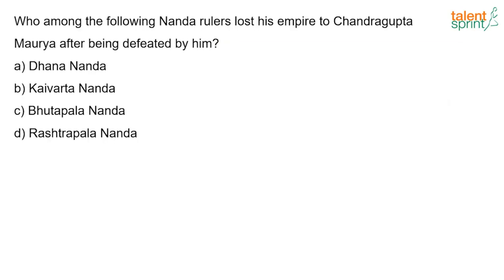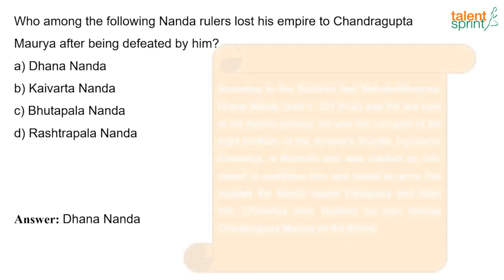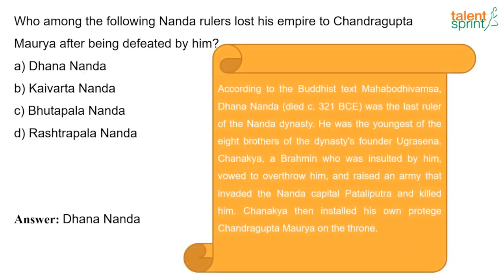Which Nanda ruler lost his empire to Chandragupta Maurya? The answer is Dhanananda. According to Buddhist texts, Dhanananda, who died in 321 BC, was the last ruler of the Nanda dynasty and the youngest of the eight brothers of the dynasty's founder Ugrasena. Chanakya, a Brahmin who was insulted by the Nandas, vowed to overthrow them, raised an army that invaded the Nanda capital Pataliputra, killed Dhanananda, and installed Chandragupta Maurya on the throne.